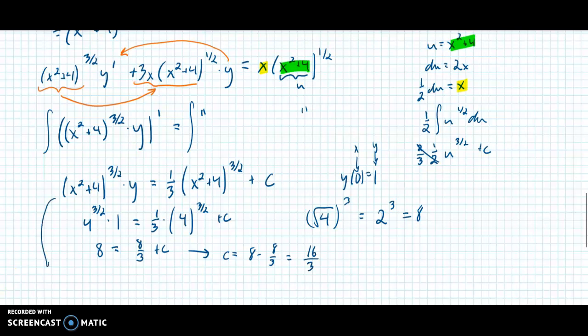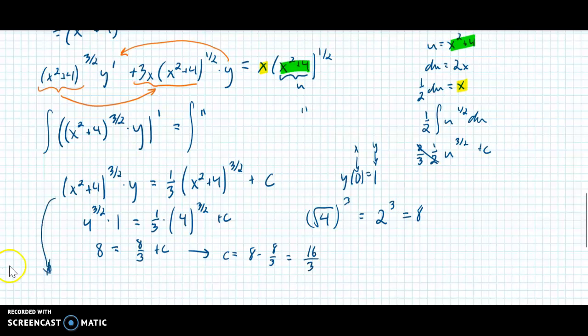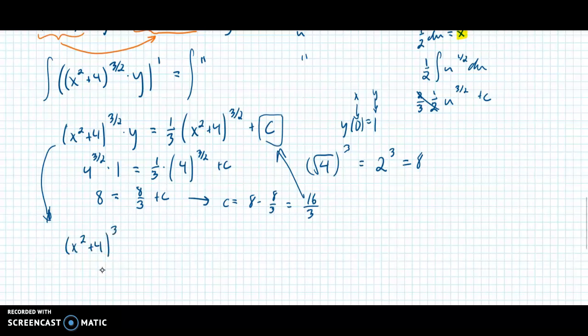So I can now plug that down here in for c. So that gives me x squared plus 4 to the 3 halves times y is equal to 1 third x squared plus 4 to the 3 halves again, plus 16 over 3. So,